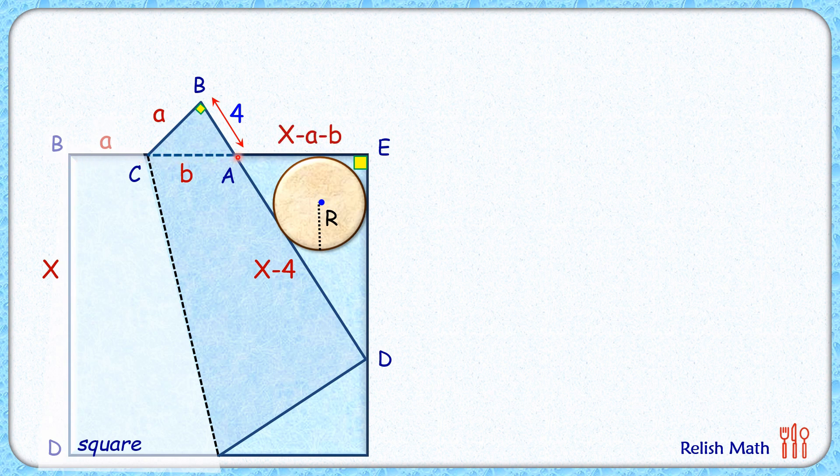These two triangles, triangle ABC and AED, these are right angle triangle and angle A is vertically opposite angles. Thus by angle-angle similarity, triangle AED is similar to triangle ABC. As the triangles are similar, thus the ratio of corresponding sides is equal.